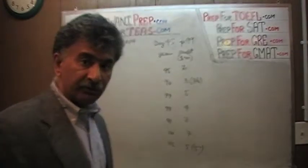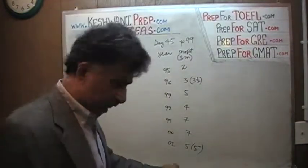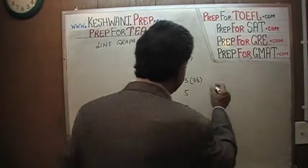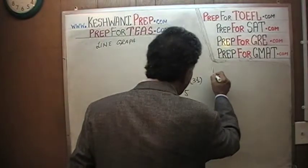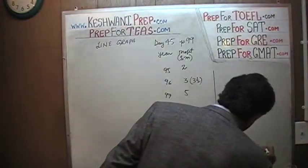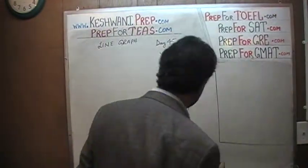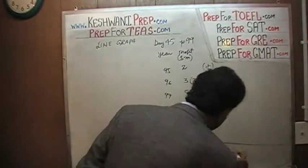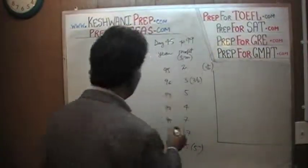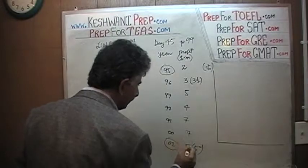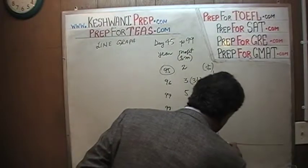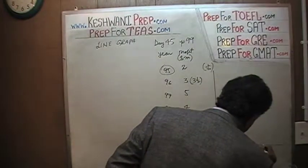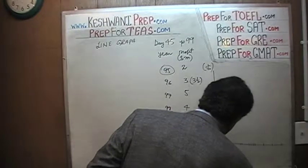So let's draw it, shall we? We are going to draw a line graph. We have to put our dollar amount here on the y-axis and the year here on the x-axis. It goes all the way from 95 to 2001.